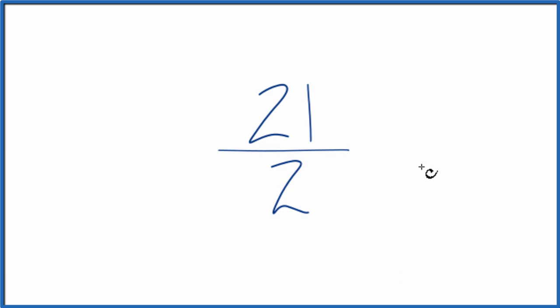And to do that, we need to find a common factor. That's something that's going to go into 21 and 2 evenly. The thing is, the only thing that goes into both 21 and 2 is 1. And if we divide 21 by 1 and 2 by 1, we end up with 21 over 2, so it doesn't change.